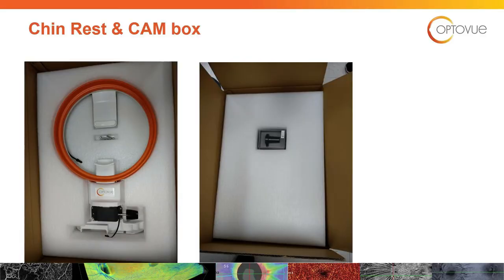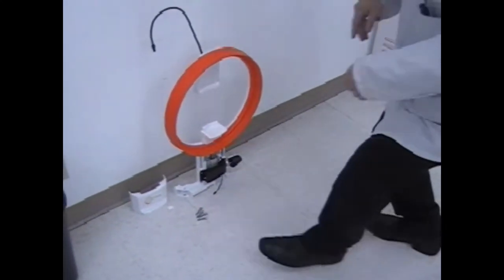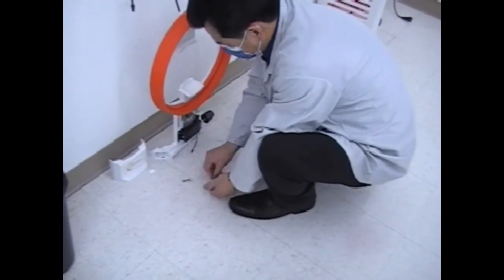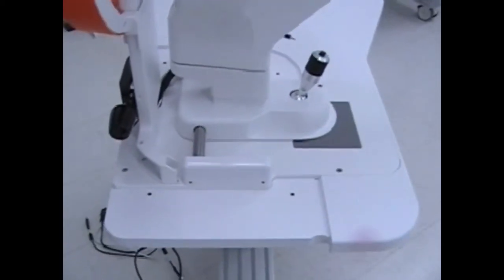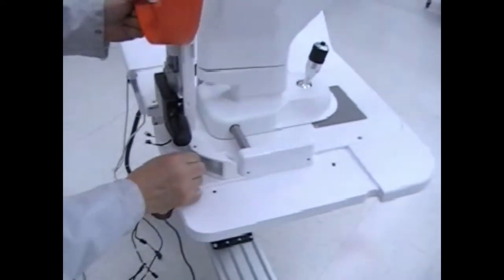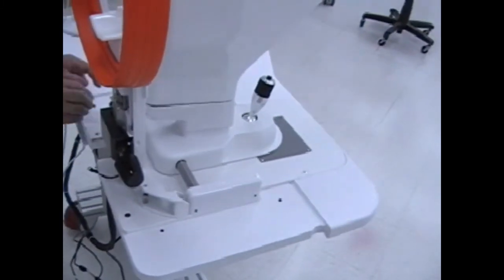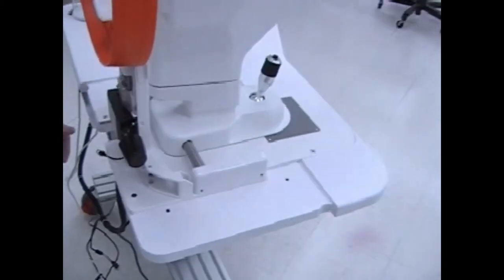Unbox the chin rest. There should be four bolts to attach it to the table, and there should also be the cam module. Unbox the cable. Make sure the cable from the scanner head is under the chin rest bracket, and remember to connect and tape down the power connection for the external fixation.